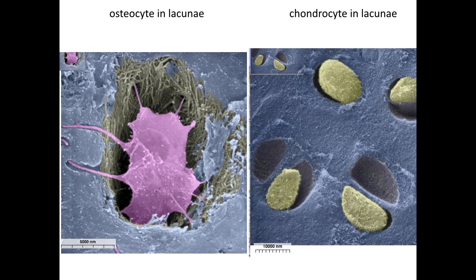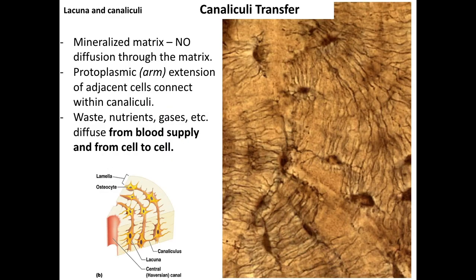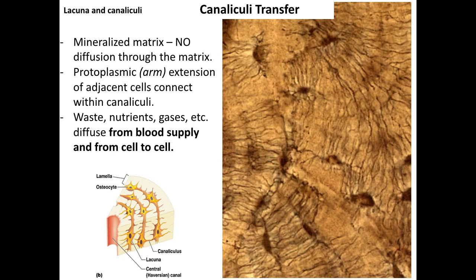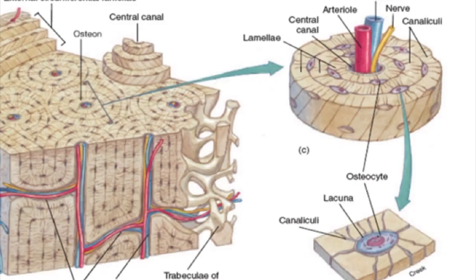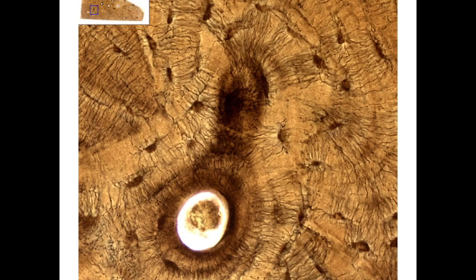In spongy bone, osteocytes within trabeculae receive their nutrients from capillaries in the surrounding endosteum via connections through the canaliculi. Osteocytes, whether in compact or spongy bone, are located in lacunae. Chondrocytes of cartilage are also in lacunae, but materials can diffuse through cartilage's watery matrix to supply those relatively inactive cells. Osteocytes, on the other hand, sit in a mineralized matrix that does not permit diffusion, so they rely on cell membrane extensions traveling through canaliculi to obtain oxygen and nutrients and to connect to a blood supply — either the central canal or the spaces within spongy bone. This vascular connection is one of the major differences between bone and cartilage, enabling bone to remodel and repair itself.